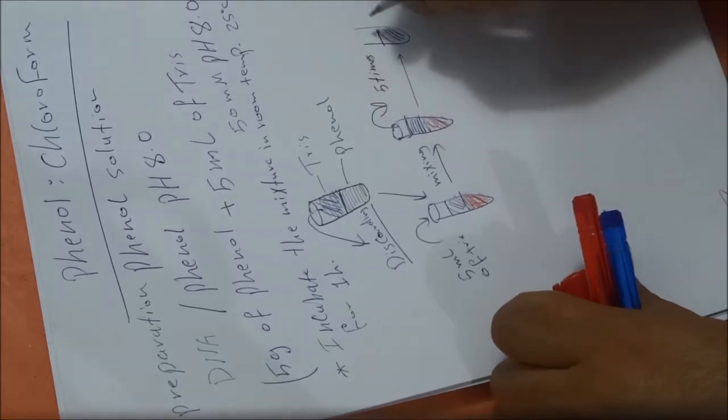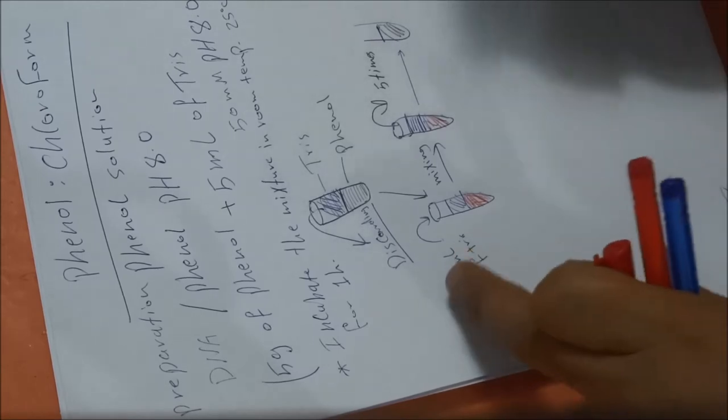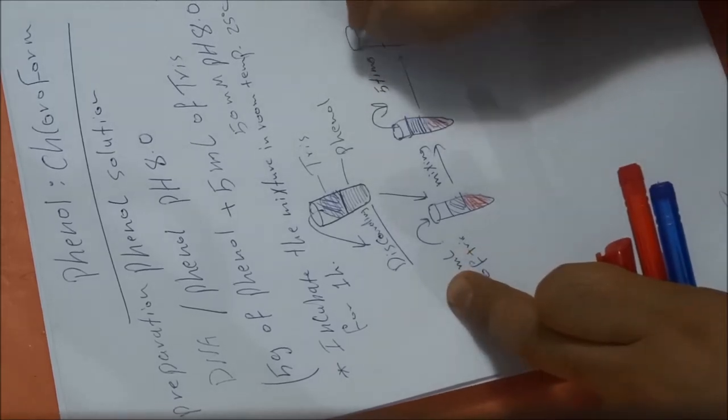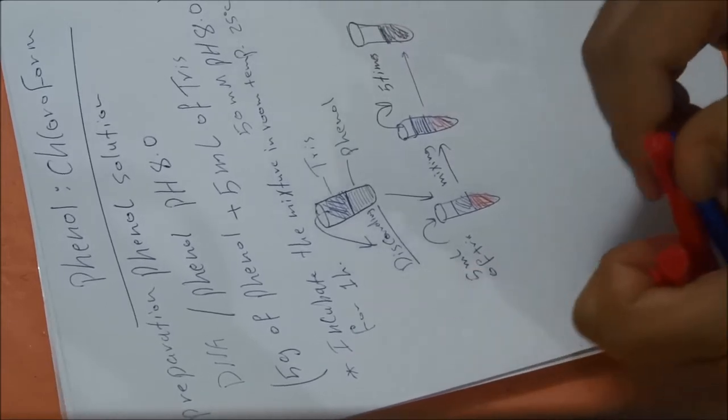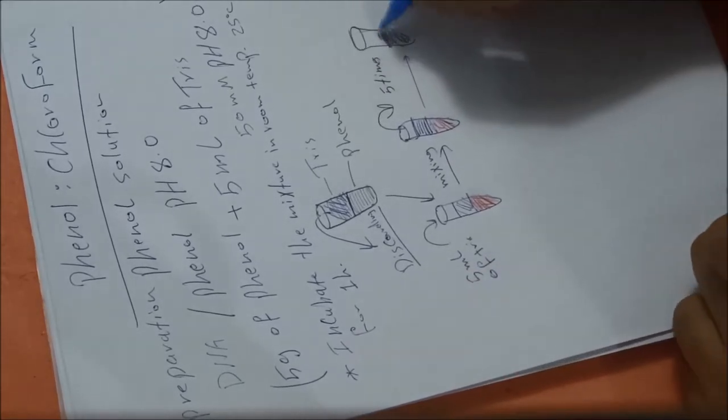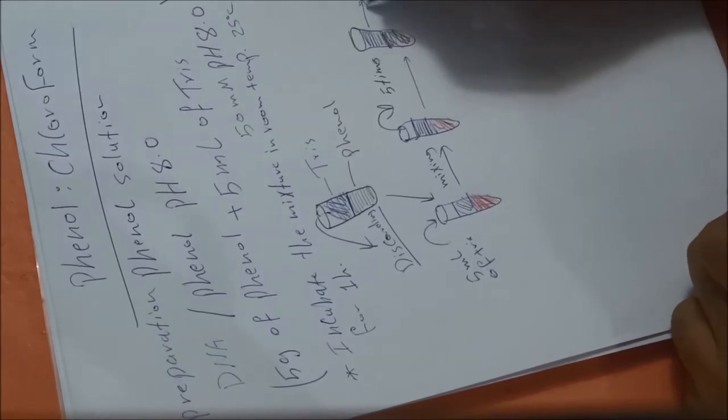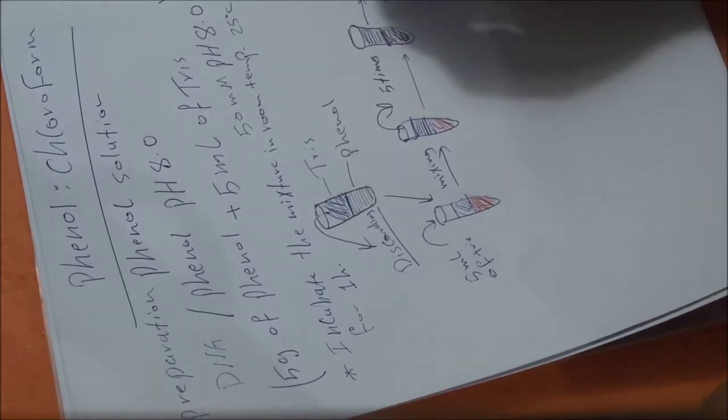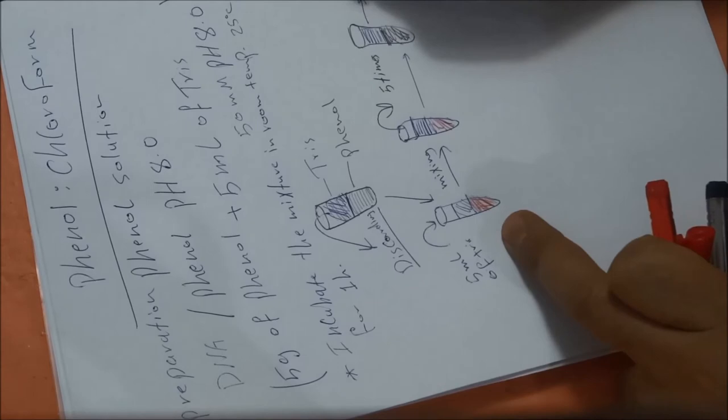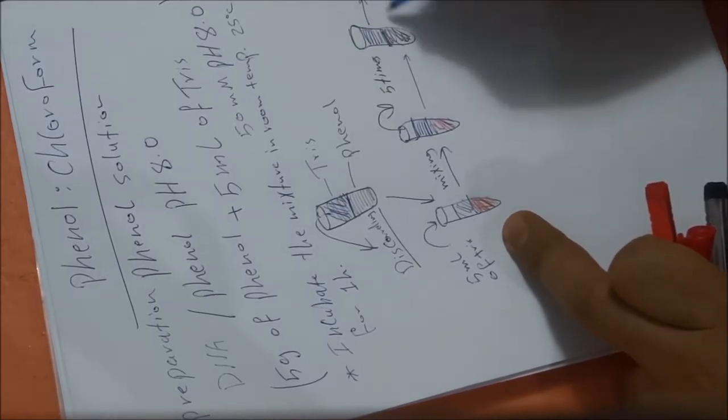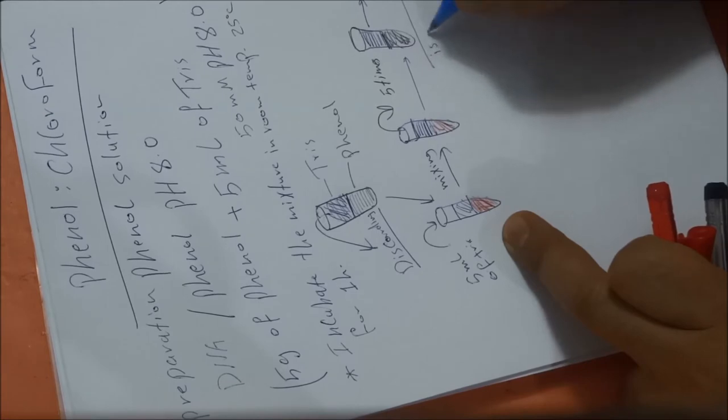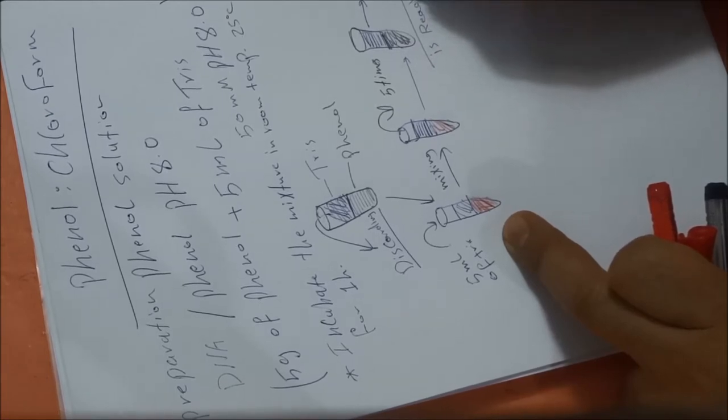After five times, you can measure the pH of the Tris after the phase separation, and you can see that the pH of this buffer will be 8. So now the phenol is ready to be used.